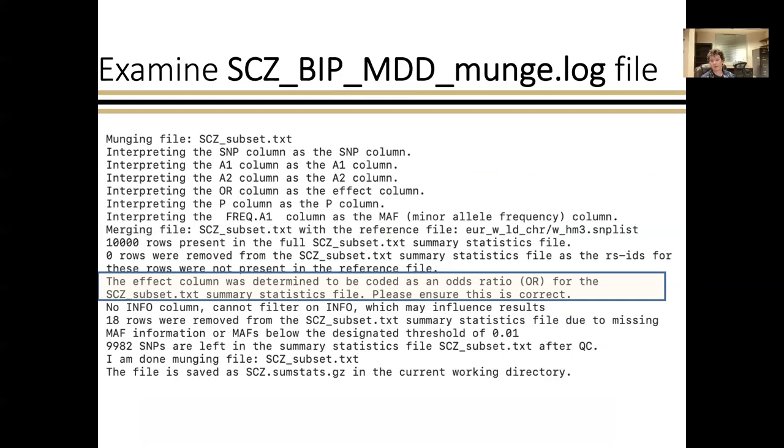When Mung runs, it produces a .log file that you should inspect to make sure things like column headers are interpreted correctly. In particular, I've highlighted this section where it prints how the effect column was interpreted. For schizophrenia, it's an odds ratio and it's interpreted correctly, but you'll want to make sure to read the corresponding readme files for the summary statistics and cross-reference whether that effect column is being interpreted right.